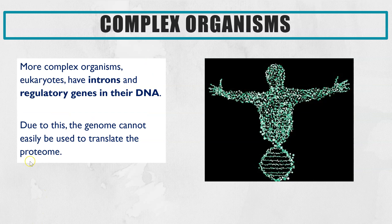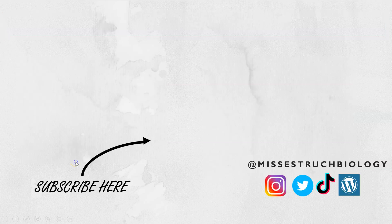Eukaryotic organisms, which are more complex, have introns within them — those sequences of junk DNA or base sequences that don't code for amino acids and therefore proteins. They also have regulatory genes: the parts at the beginning and end of a gene which aren't directly coding for an amino acid. For that reason, you can't use the genome directly or easily to translate the proteome, so it's slightly harder.